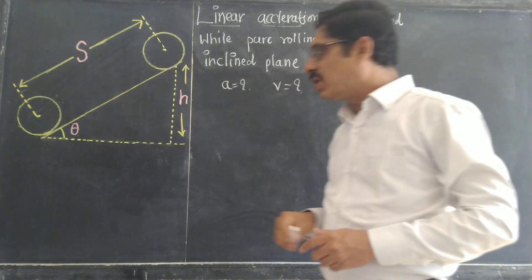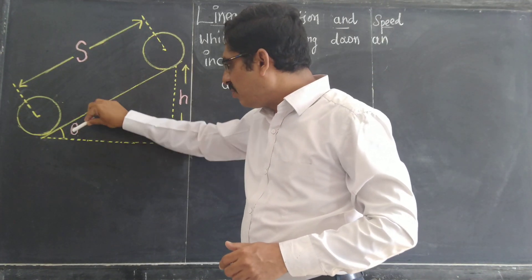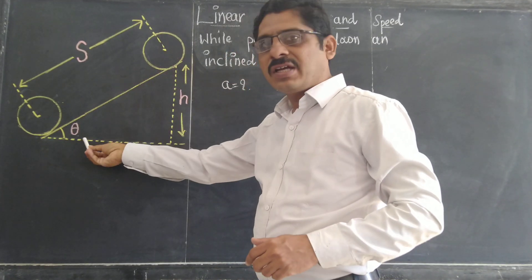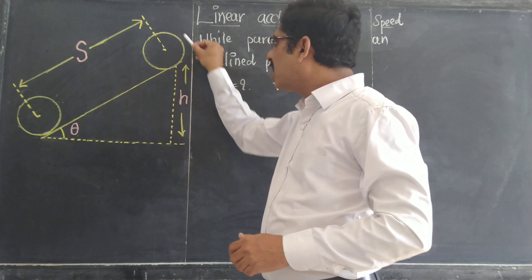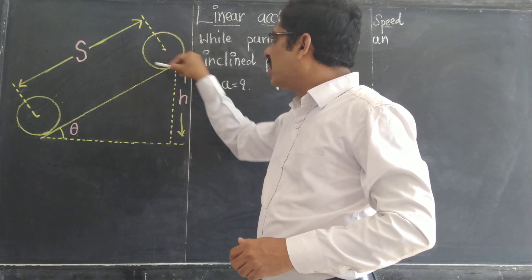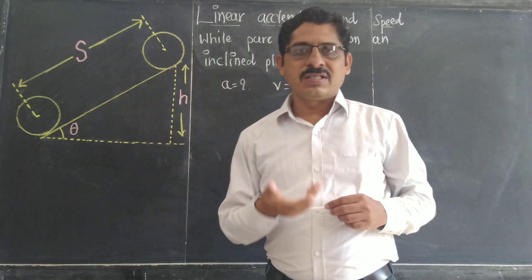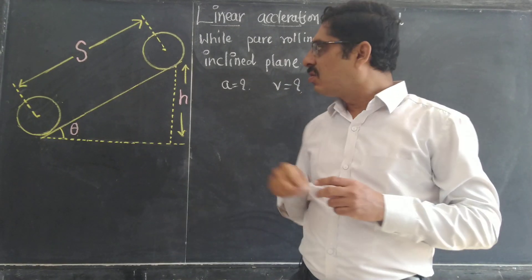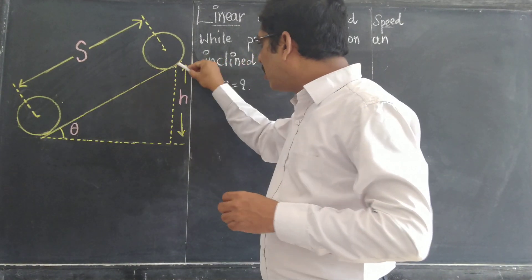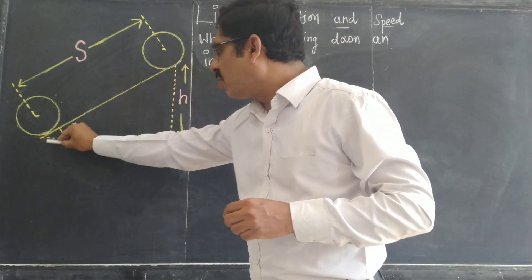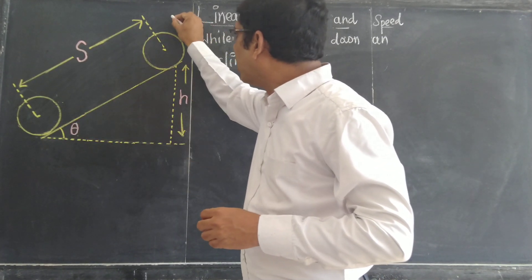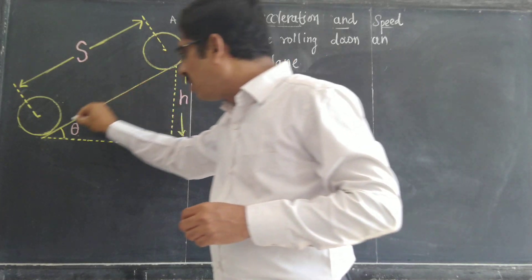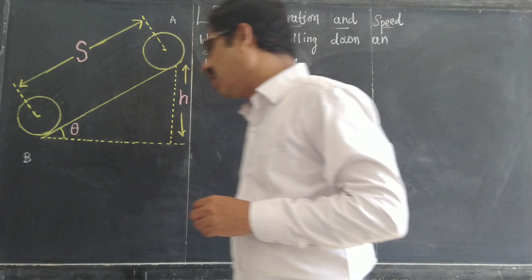We have a plane surface making a certain angle theta. We consider a circular body, for example a ring, a disc, a rolling cylinder. The body rolls without slipping. We look at point A on the center and point B at another position on the body.